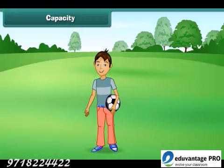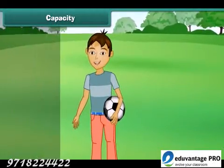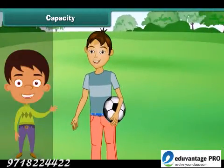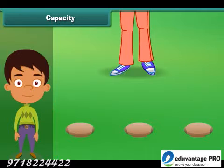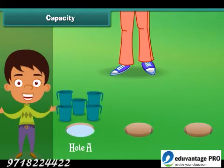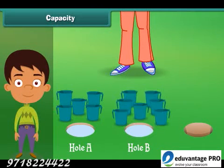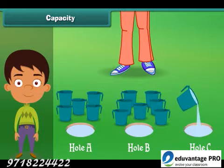Capacity. Rama was playing in the carton. He saw three holes in the playground. He decided to fill them with water. Hole A gets filled with five mugs of water. Hole B gets filled with seven mugs of water. And hole C gets filled with three mugs of water.